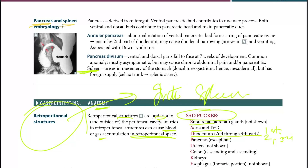The pancreas is derived from the foregut. The ventral pancreatic bud, which is anterior, contributes to the uncinate process. Both ventral and dorsal buds contribute to the pancreatic head and the main pancreatic duct. Ventral means anterior and dorsal means posterior.